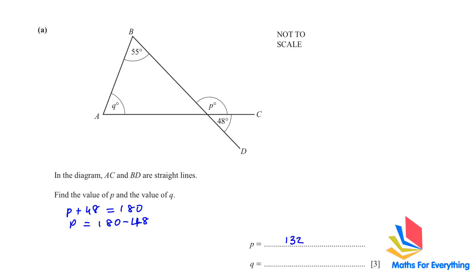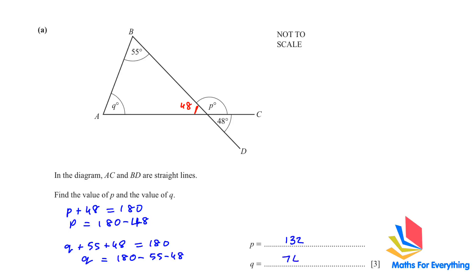To find Q, we know that this is a vertically opposite angle, so this angle is equal to 48. The angle sum property of a triangle tells us that when we add all three angles — Q plus 55 plus 48 — we get 180. Therefore Q is equal to 180 minus 55 minus 48, which gives 74.